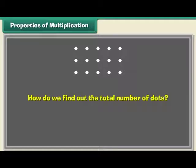Properties of multiplication. Now let us learn some properties of multiplication. Look at these dots. There are 3 rows of them. In each row, there are 5 dots.